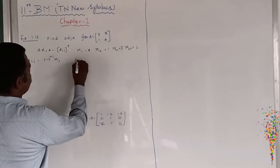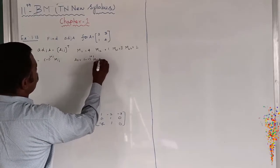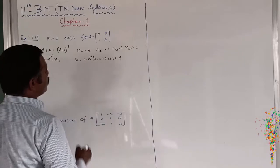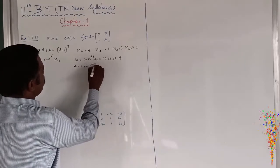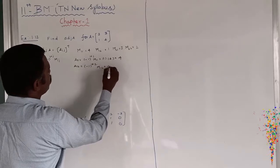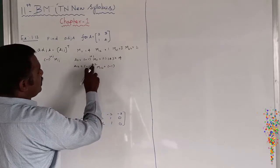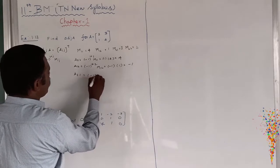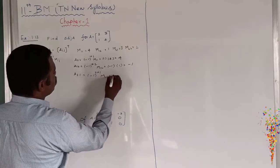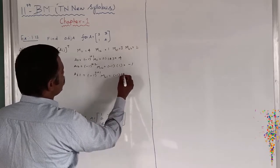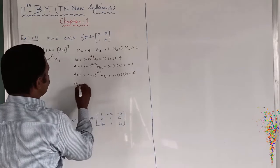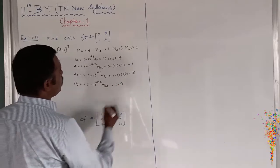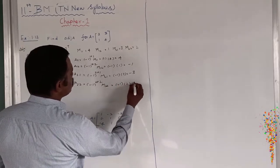Now calculating cofactors: A11 equals minus 1 to the power 1 plus 1, times M11. Minus 1 to the power 2 is plus 1, so plus 1 into 4 equals 4. A12 equals minus 1 to the power 1 plus 2, times M12. Minus 1 to the power 3 is minus 1, and M12 is 1, therefore A12 equals minus 1. A21 equals minus 1 to the power 2 plus 1, times M21. M21 is 3, therefore A21 equals minus 3. A22 equals minus 1 to the power 2 plus 2, times M22. That gives plus 1, and M22 is 2, so A22 equals 2.